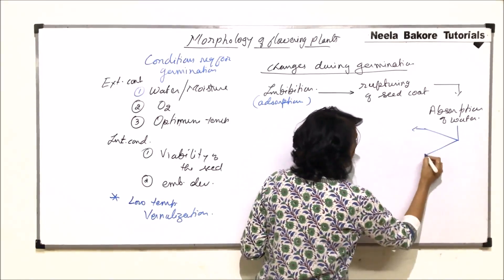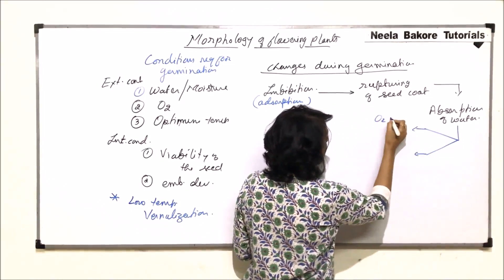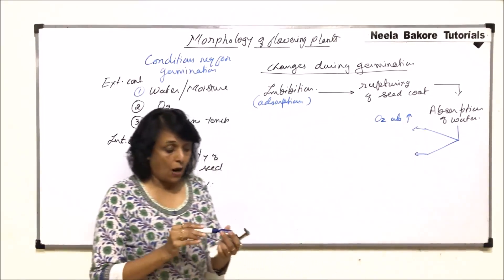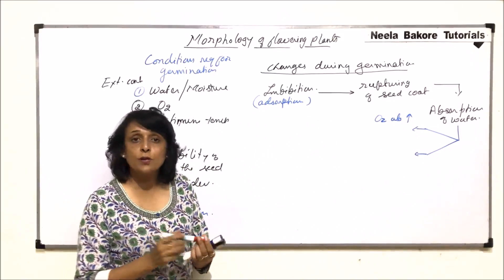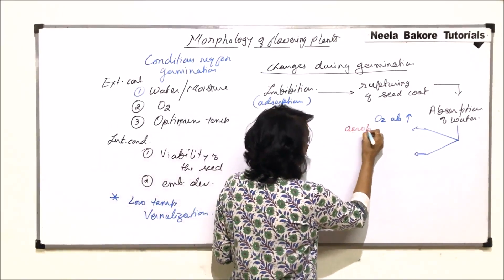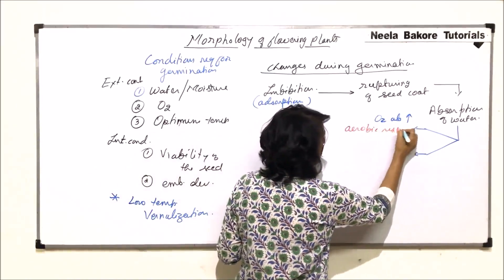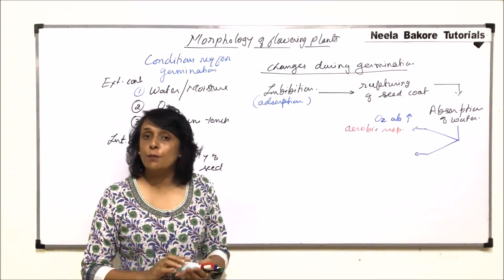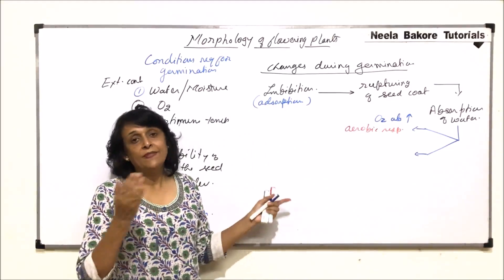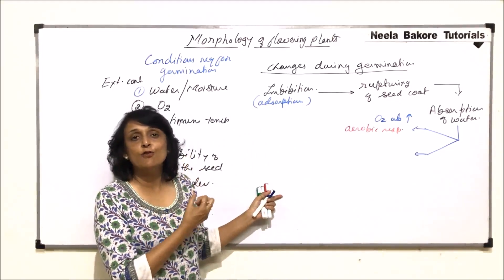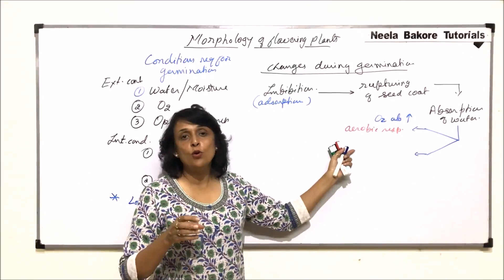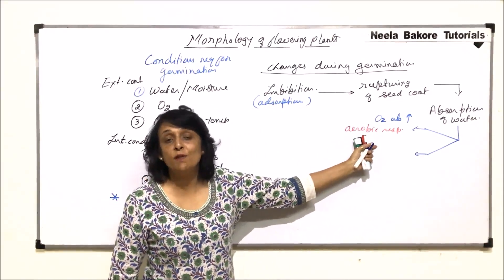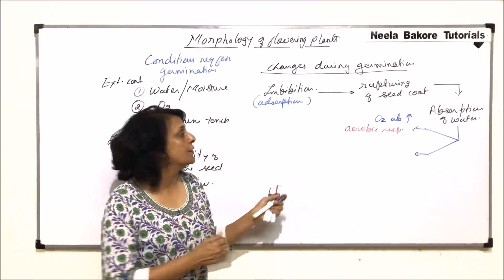Number one, oxygen absorption will increase. Increased oxygen absorption means aerobic respiration will start. Aerobic respiration results in formation of ATP. The reserved food material will be digested, glucose will be broken down to produce ATP, and this ATP will be required for the further changes.